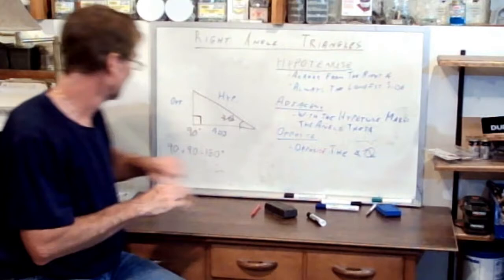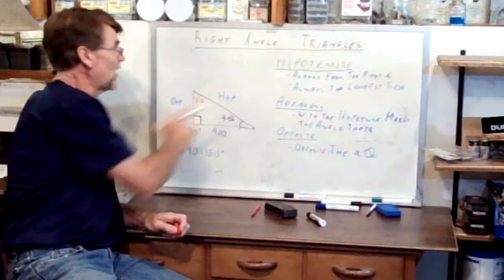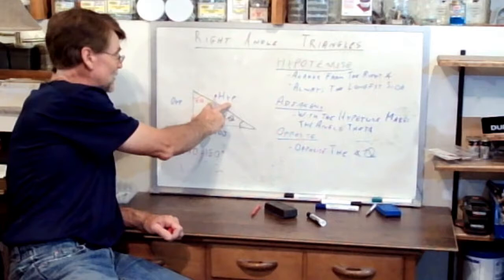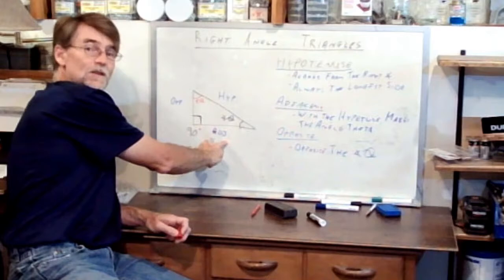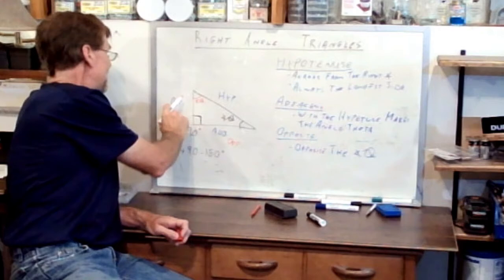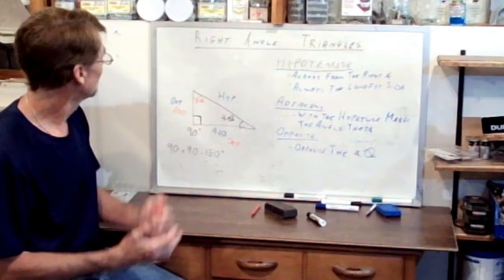To show the final point: if I decided to call the other angle theta, this is still the hypotenuse — its definition is across from the right angle and always the longest side, regardless of which angle we choose as theta. But now the labeling of opposite and adjacent swaps. If we change the angle theta, it changes the labeling of the opposite and the adjacent.